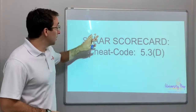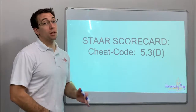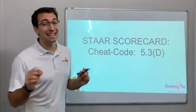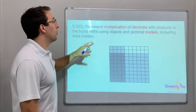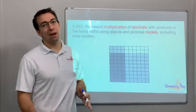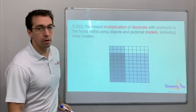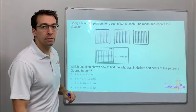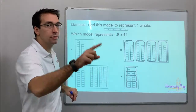Hey friends, video number two, star scorecard cheat code 5.3D. We're talking about multiplication of decimals using area models and pictorial models. This is video number two, so please watch video number one first.